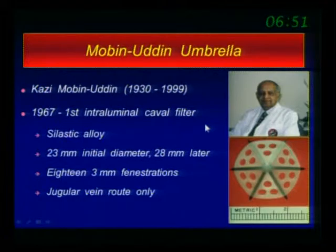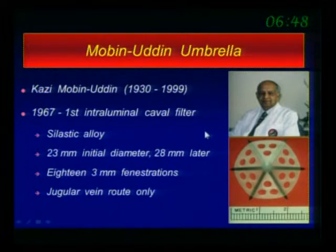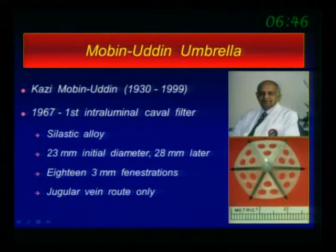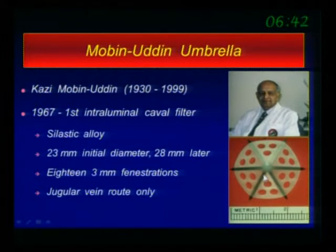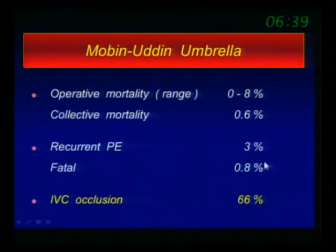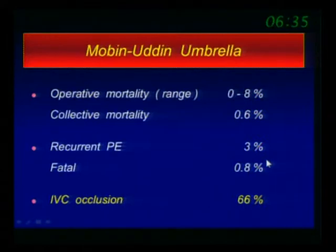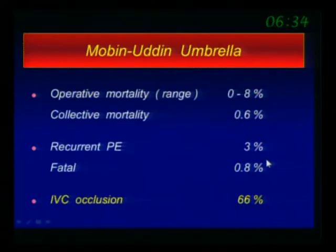At the same time, a year later, Mobin-Uddin came with a filter — the same concept, basically a spring and wire with an umbrella around it — but that also caused 66% vena cava occlusion. So that was also abandoned. I'm sure some of you have done this previously.